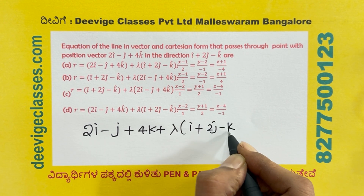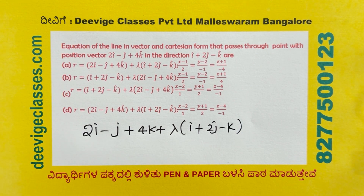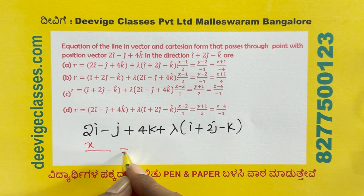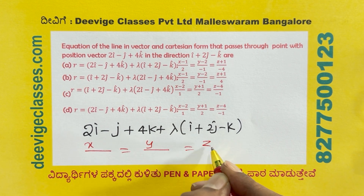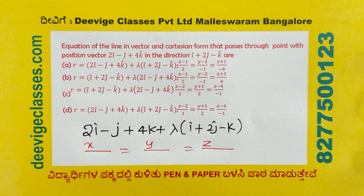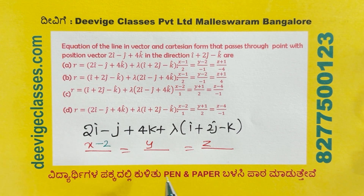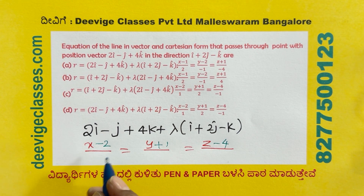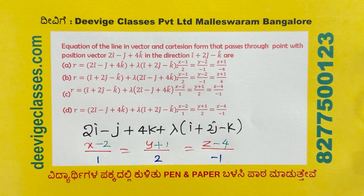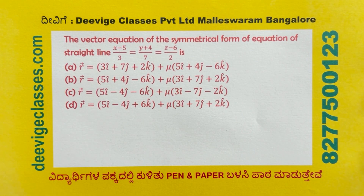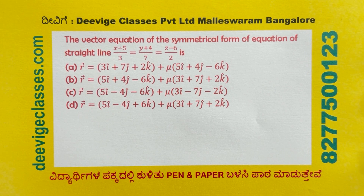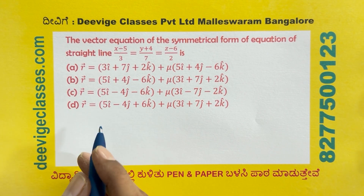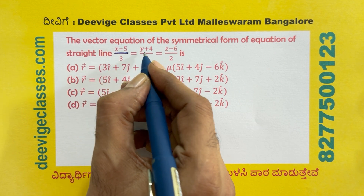For the Cartesian form: x minus 2 over 1 equals y plus 1 over 2 equals z minus 4 over minus 1. The numerators come from the position vector (2, minus 1, 4) and the denominators from the direction vector (1, 2, minus 1).